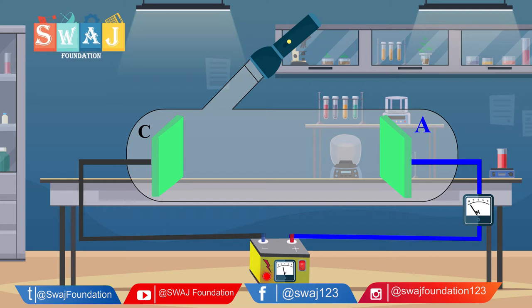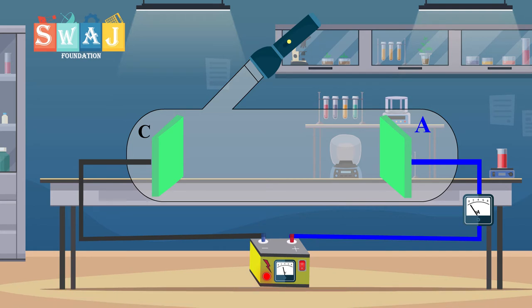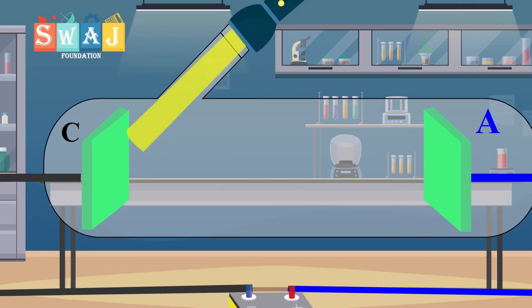The electrode A, connected to the positive terminal of the battery, is known as the anode. The electrode C, connected to the negative terminal, is known as the cathode. When monochromatic light is allowed to shine on the cathode, it begins to emit electrons.